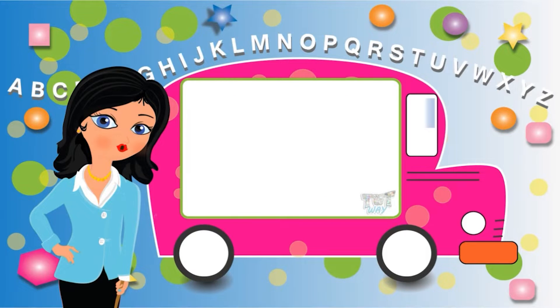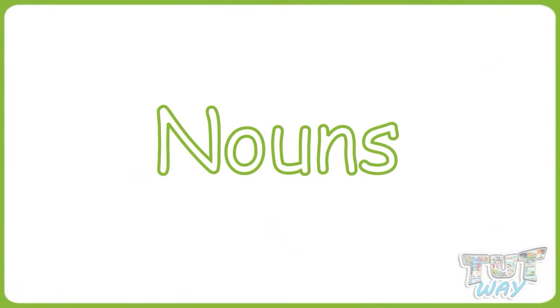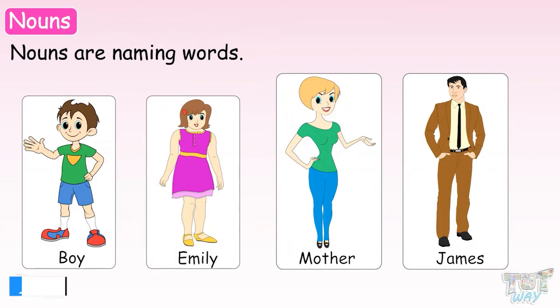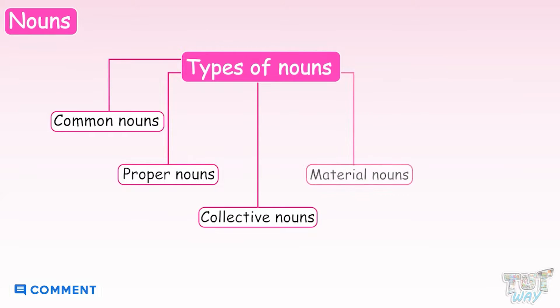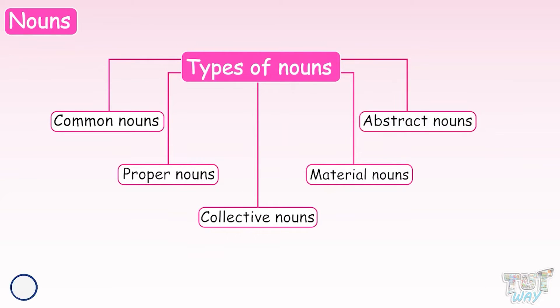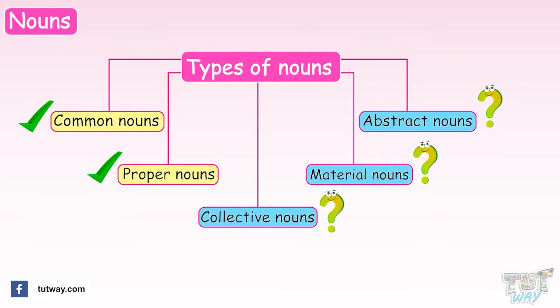Hi kids! Today we will learn about more types of nouns. So let's start. We learned that nouns are the naming words, and nouns can be of many types: common nouns, proper nouns, collective nouns, material nouns, and abstract nouns. We have already learned about common and proper nouns in the previous section. Now we will learn about the other three types of nouns in this section.